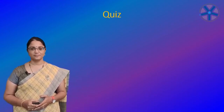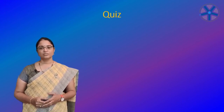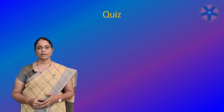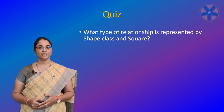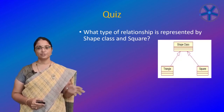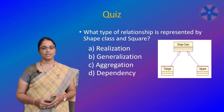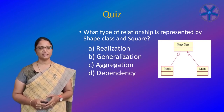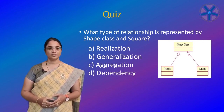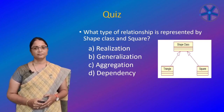Now for the quiz. What type of relationship is represented by shape class and square? The options are: realization, generalization, aggregation, and dependency. If you see it clearly, you can identify it as generalization.